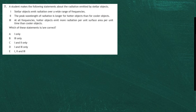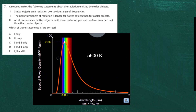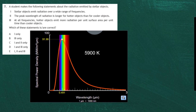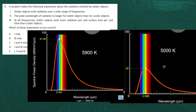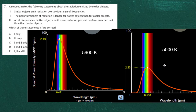On the PhET simulation, here is the black body radiation graph of a star at 5900 kelvin, and here is one at 5000 kelvin. For statement 1 — stellar objects emit radiation over a wide range of frequencies — you can see from both graphs that radiation is emitted over lots of wavelengths, which corresponds to lots of frequencies. So statement 1 is correct.